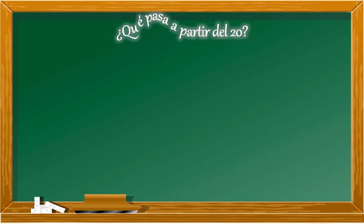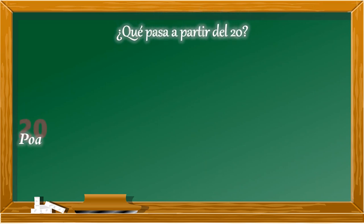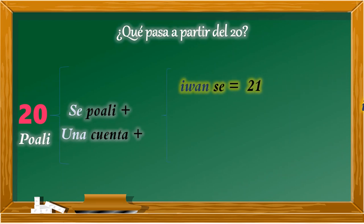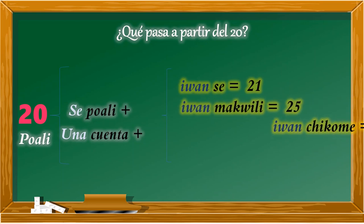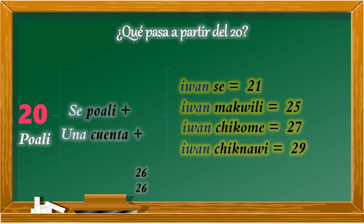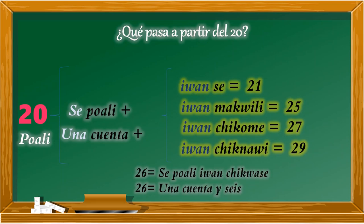¿Qué pasa a partir del 20? Hasta el 20 se comienzan a repetir los números anteriores para poder conformar cantidades mayores. El 20, conocido como poale o poali, va unido a los números anteriores. Por ejemplo, para el 21 sería cepoali iwance, el 25 cepoali iwamakuili, el 27 cepoali iwamachikome, el 29 cepoali iwamachiknawi.